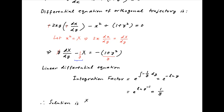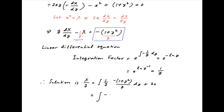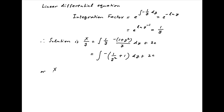The solution of this linear differential equation is given by X times the integrating factor 1 upon y, equal to the integral of (1 upon y) times the right-hand side, which is the integral of minus (1 upon y square plus 1) dy plus 2c. Therefore the solution is X upon y is equal to 1 upon y minus y plus 2c.